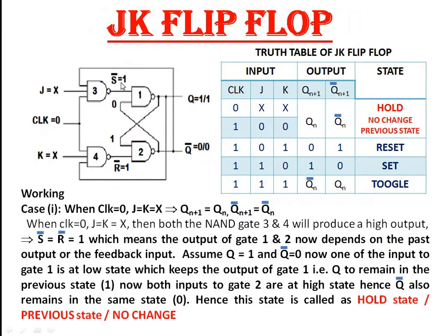The working of JK flip-flop will be seen case by case. The first case is when clock is 0. As mentioned earlier for any clocked flip-flop, if clock is 0, the flip-flop will be inactive or it enters into hold state. Same for JK flip-flop — when clock is 0, one of the inputs to both gate 3 and gate 4 is at low state, hence it produces a high output at both gates. That means S̄ and R̄ are both equal to 1, and when S̄ = R̄ = 1, it enters into hold state.